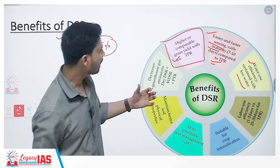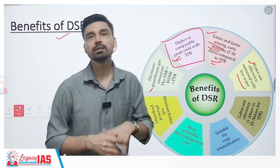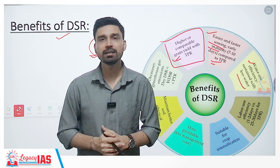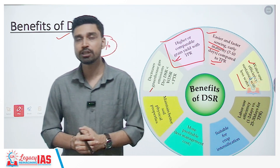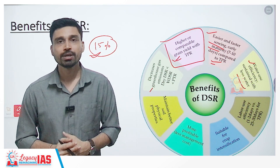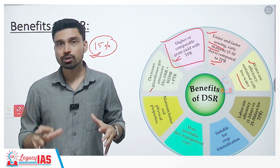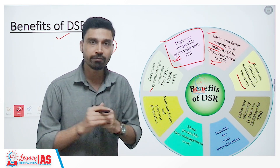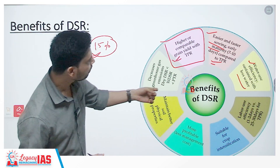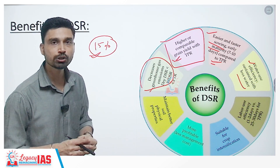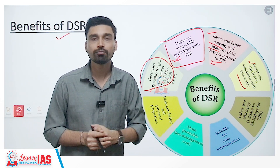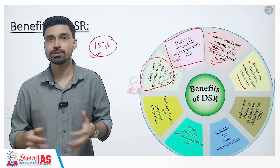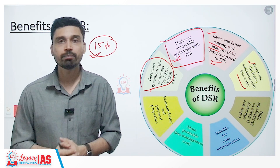DSR also decreases greenhouse gas emissions. When rice remains in wet fields under stagnant water conditions for a long period, it releases methane gas. In fact, wet paddy fields are one of the largest sources of methane emission on earth. By using DSR, we can decrease the amount of greenhouse gas emissions, which is good for our environment. In this way, the DSR method over traditional methods is environment friendly as well.